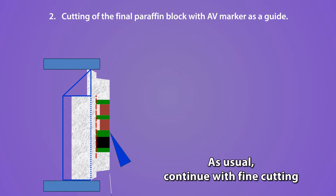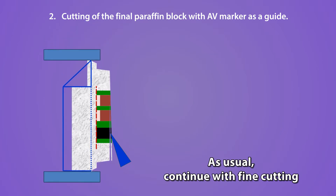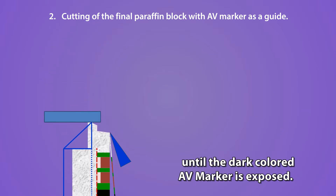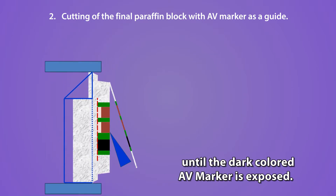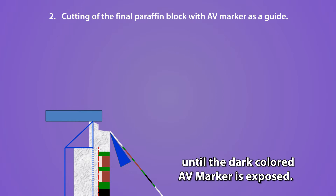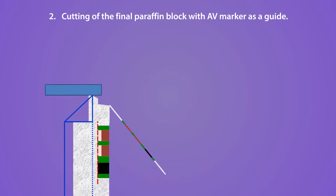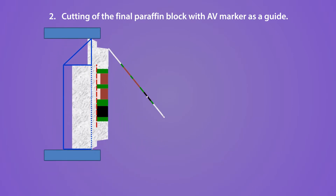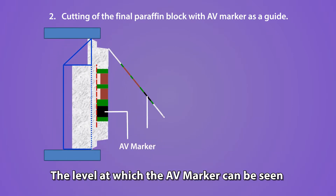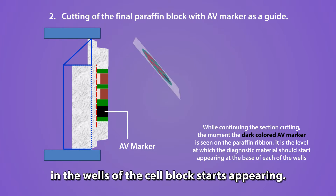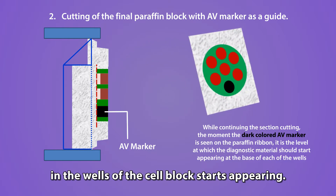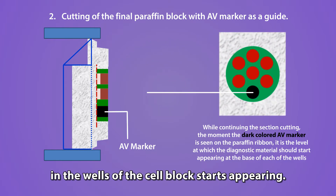As usual, continue with fine cutting until the dark-colored AV marker is exposed. The level at which the AV marker can be seen is the level where the diagnostic material in the wells of the cell block starts appearing.